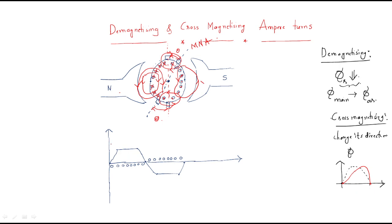Just look at what happens here: in the north pole region we have some dotted conductors. Observe that one dot is present, and the remaining are all crosses — cross, cross, cross. In the shifted region we have crosses and then dots — all are dots. This distribution of crosses and dots determines the armature MMF waveform behavior.